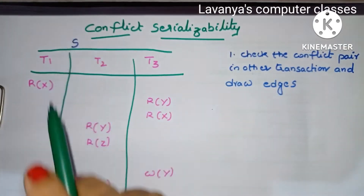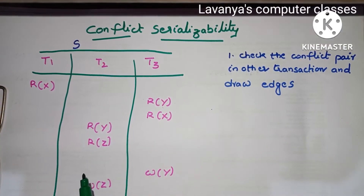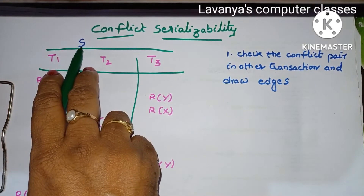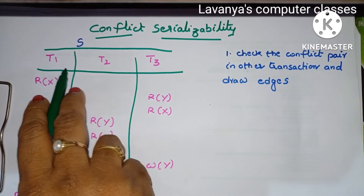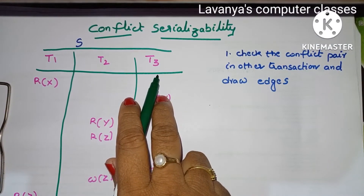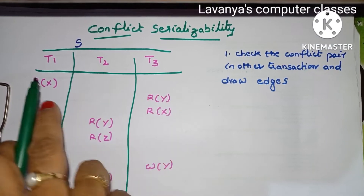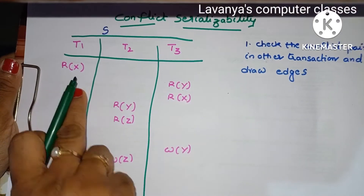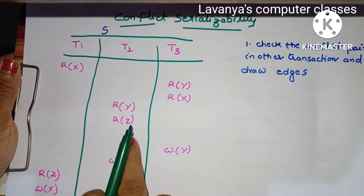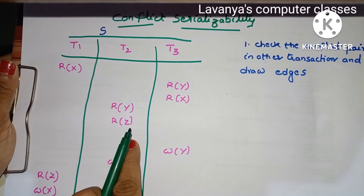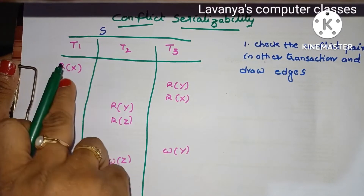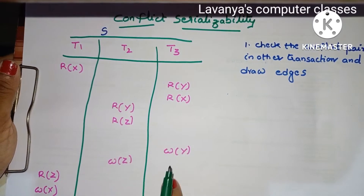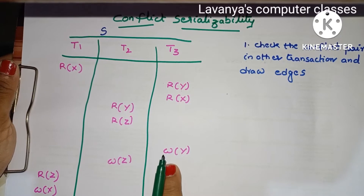In this video, I will explain conflict serializability with an example. I will take one schedule with three transactions — T1, T2, T3 — with some operations. There are three items: X, Y, Z. I will apply some operations like R for read operation and W for write operation.